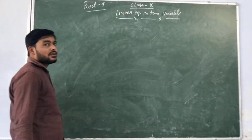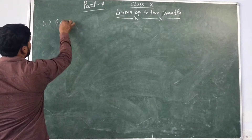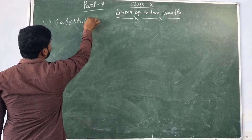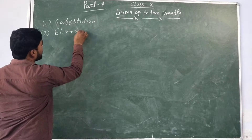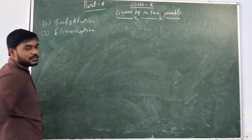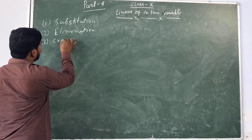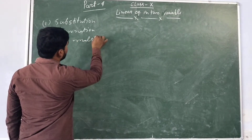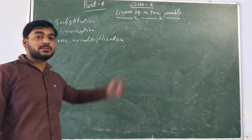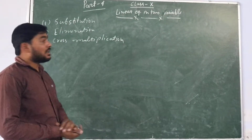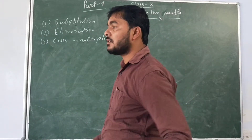There are three methods for solving linear equations in two variables. The first method is substitution, the second is elimination, and the third is cross multiplication. Now, one by one, we will look at all three methods.